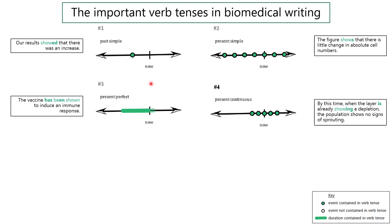The present continuous is the fourth most used verb tense in biomedical writing, and it represents things that are more closely related to now than the present simple. For example: 'By this time, when the layer is already showing a depletion, the population shows no signs of sprouting.' The key is that it's probably related to some other event.